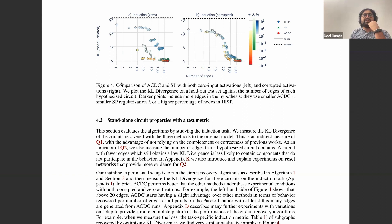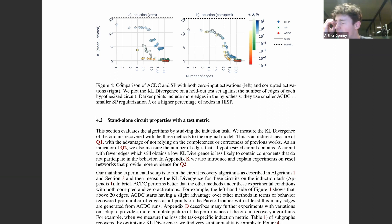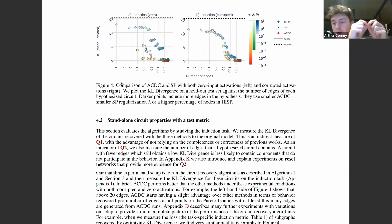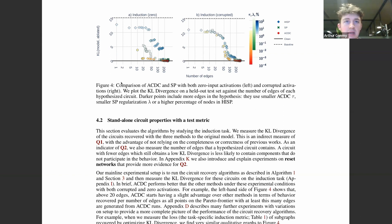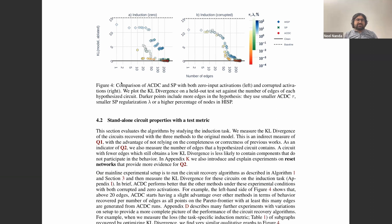To summarize the benchmarking approaches: both use Pareto optimality rather than point optimality, which is important in interpretability because models rarely have clean separations between parts that do a task and parts that don't — there's always a long tail of components partially contributing. Future work should think more about the Pareto optimality of explanations rather than simply 'did we find the circuit or not.' The discussion now moves to pathological cases that make measuring circuit quality hard — negative and backup heads.